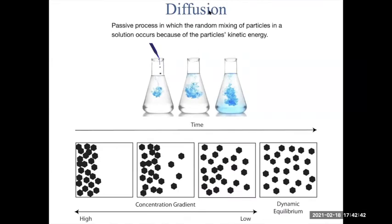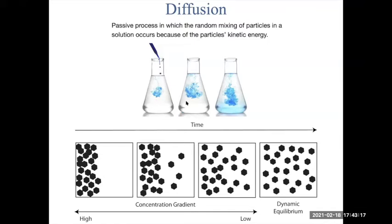The first topic is the general idea of diffusion — the process in which random mixing of particles in a solution occurs because of the particles' kinetic energy. For example, you're putting a drop of blue dye in water to become a solution. You have the solute and the solvent, and these blue dye molecules have some kinetic energy.